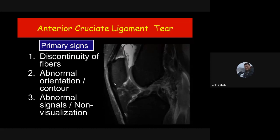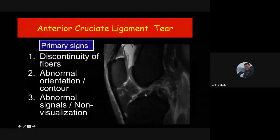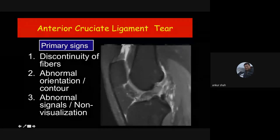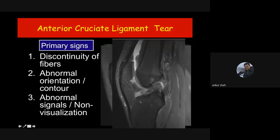MRI signs for ACL tear are divided into primary and secondary signs. Primary signs directly indicate ACL tear: discontinuity of the fibers (normal black signals completely lost), abnormal orientation of the fibers (not parallel to Blumensaat's line, appearing flattened), and absence of the ligament altogether (particularly in chronic injury cases).